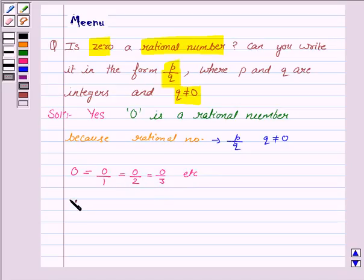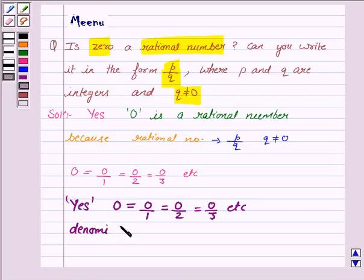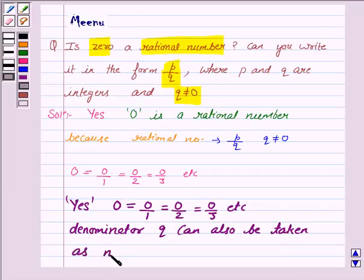Hence, our answer is yes, zero is a rational number because it can be written as zero upon one, or zero upon two, or zero upon three, etc. And denominator Q can also be written as negative integer.